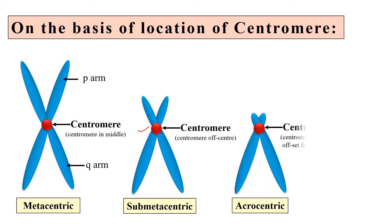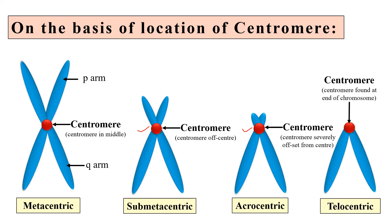The next type is acrocentric. Here the centromere is shifted even further from the center — it is severely offset from the middle portion of the chromosome. In humans, chromosomes number 13 to 15, 21, 22, and chromosome Y are the acrocentric chromosomes.